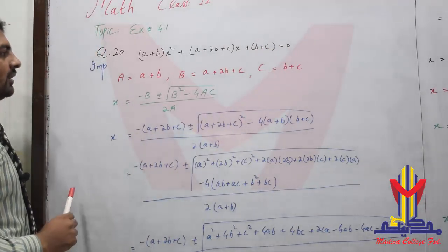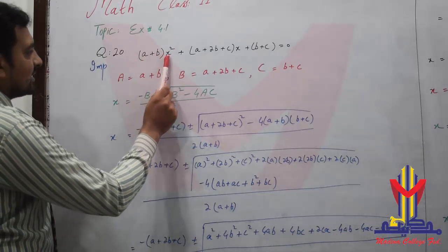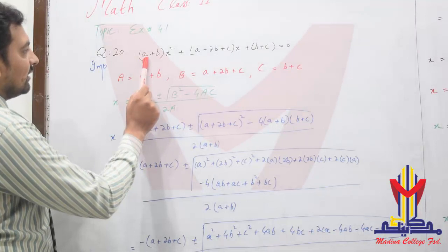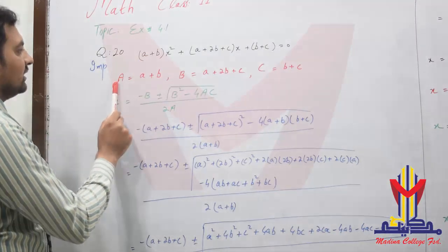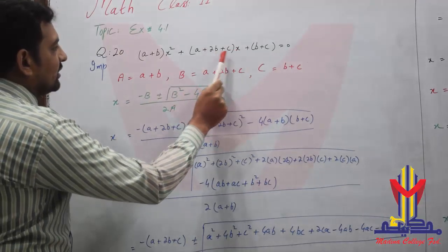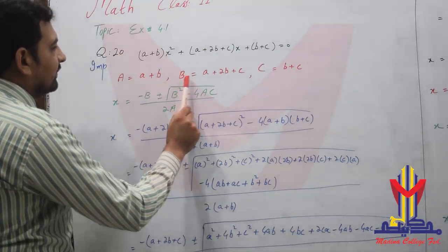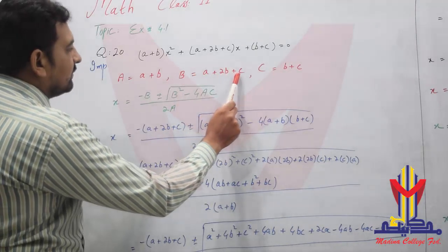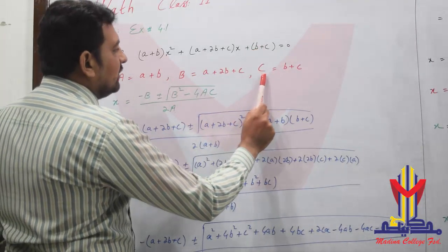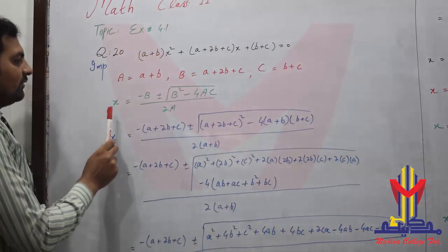First we need to identify the values of A, B, and C. The coefficient of x² gives us small 'a' (capital A) = A+B. The coefficient of x gives us B = A+2B+C. The constant term gives us C = B+C.